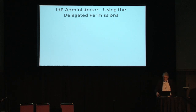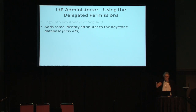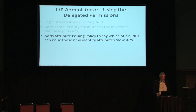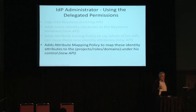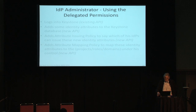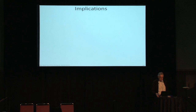The IDP administrator, with delegated permissions, logs into Keystone via the existing API with username and password, adds identity attributes specific to their system to the Keystone database, adds an attribute issuing policy restricting those attributes to their IDP only, and adds a mapping policy specifying how those attributes map to project roles and domains. If any other IDP tries to assert those attributes, they'll be discarded by the issuing policy.